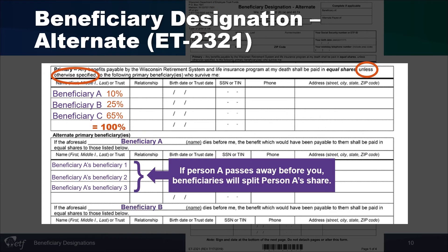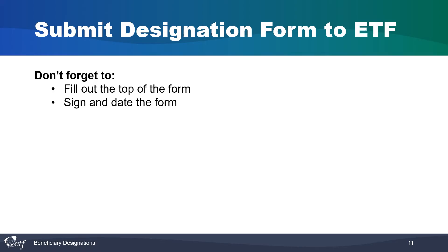If you have any questions, call ETF at 1-877-533-5020 and a benefits specialist would be happy to help you. Before submitting your form to ETF, make sure you have filled out the top of the form and that you signed and dated it. If these sections are missing, the form will be rejected.